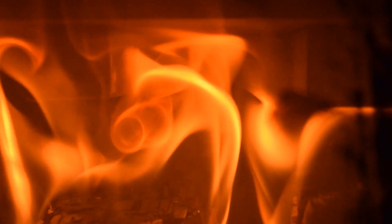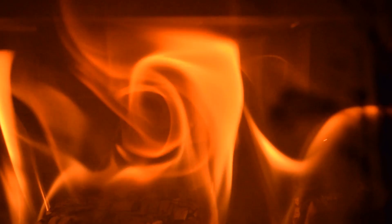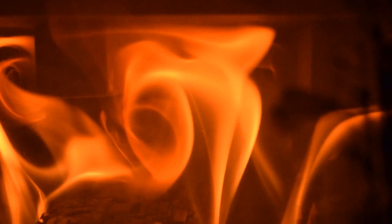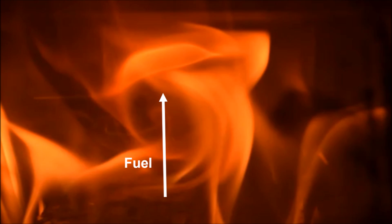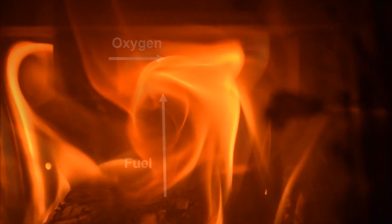In any fire, fuel and oxygen react together and produce heat. A fire in a wood stove is an example of a diffusion flame, meaning that the fuel from the wood and the oxygen from the air need to mix together before they can combust.